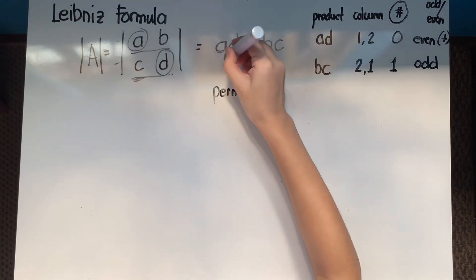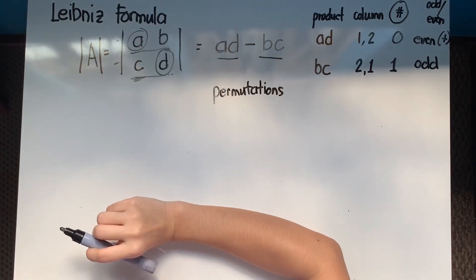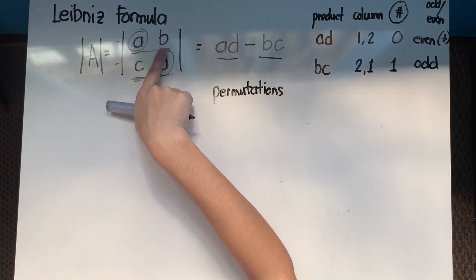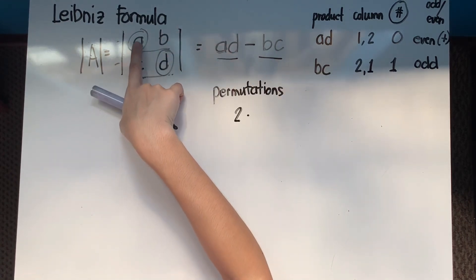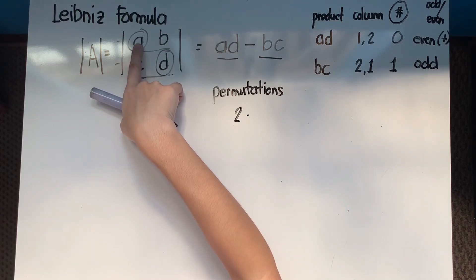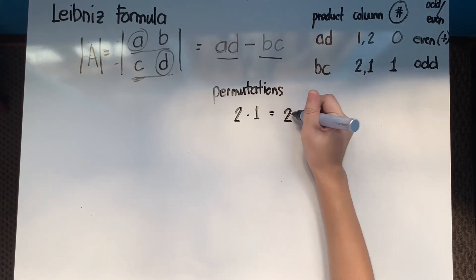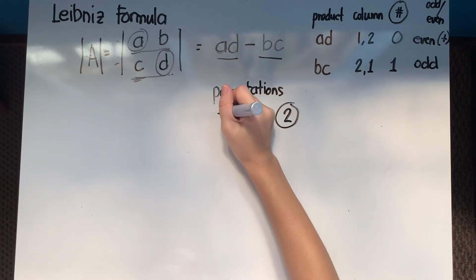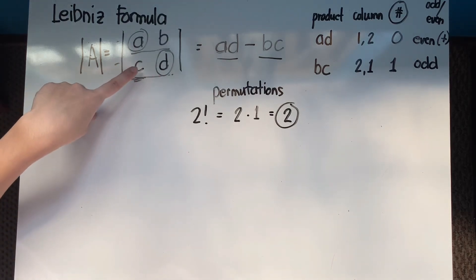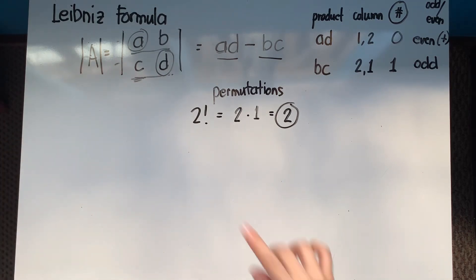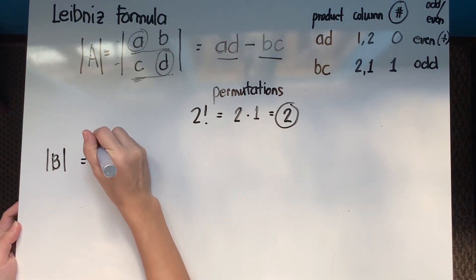To determine how many products a matrix has, we apply the counting principle. For a 2x2 matrix, there are 2 choices in the first row, then only 1 remaining in the second row, giving 2×1 = 2 products, which is 2 factorial. For a third-order matrix, that would be 3 factorial. The order of the matrix determines the number of products.